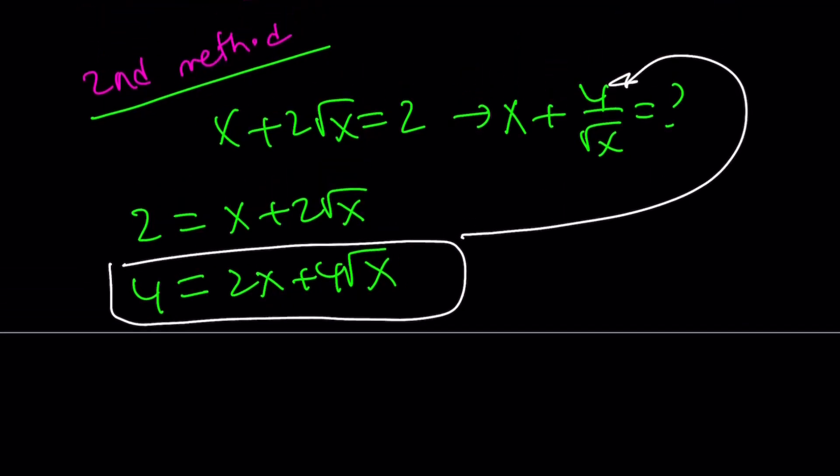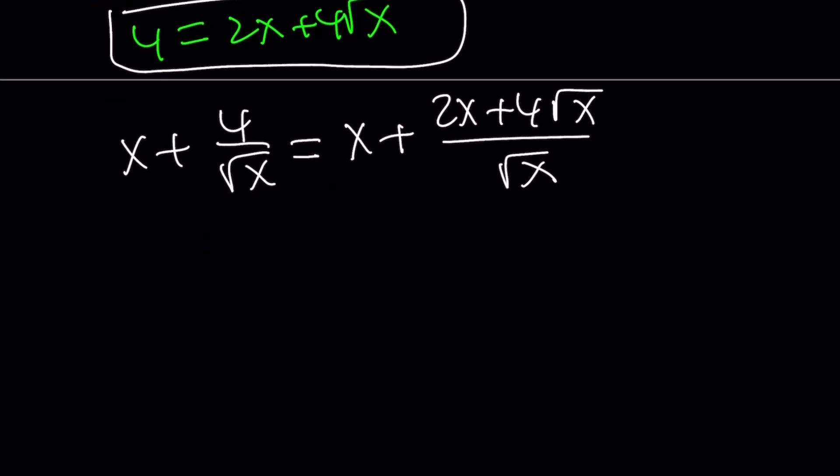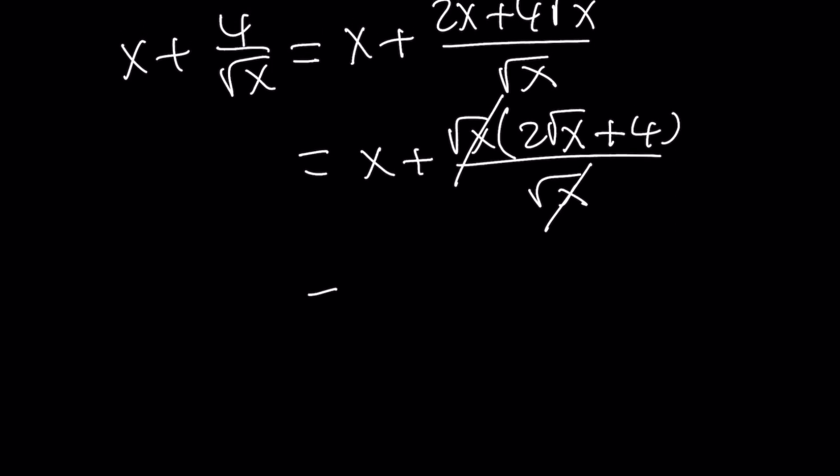Make sense? Because in the expression that we're trying to evaluate, we have a 4. So most of the time, we replace variables with numbers, but this time we're going to do the opposite. So x plus 4 over square root of x equals x plus, we're going to replace the 4 with 2x plus 4 root x. And then the square root of x is going to stay the same. To simplify this, I'm going to factor out a square root of x in the numerator. That gives us 2 times the square root of x plus 4, and that is divided by square root of x. Square root of x cancels out. We know that x does not equal 0. So from here, we get x plus 2 times square root of x plus 4.